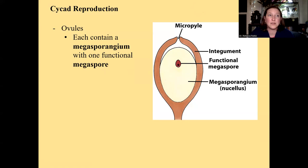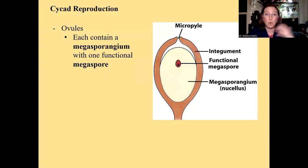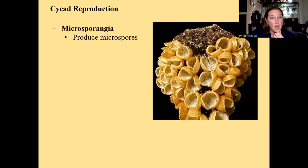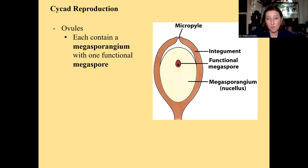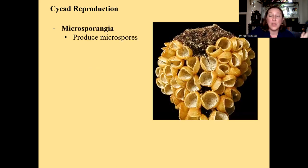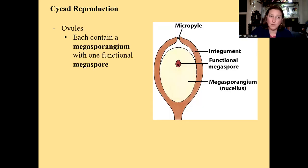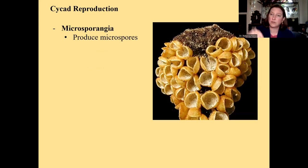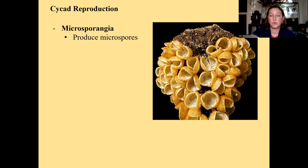Cycads have ovules — they're gymnosperms. Remember: naked seed, naked ovules. Cycads have ovules that are exposed to the elements, not inside an ovary. This is where the female gametophyte will ultimately live, inside the ovule. The structures that produce microspores are microsporangia. The microsporangia on cycads kind of look like Pac-Man — all those little yellow things in this picture are each a microsporangium.